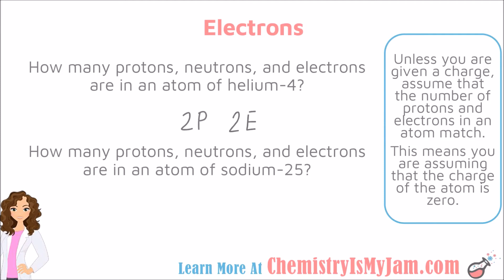And then from the mass number, we can determine the number of neutrons. Mass number minus protons tells me that there are 2 neutrons in this atom. We can repeat this process for sodium-25. You can look at the periodic table and determine that sodium is element 11, so there are 11 protons. Since we are not given a charge, we can assume that there are also 11 electrons. The 25 is the mass number. Mass number minus protons tells us the number of neutrons, so this isotope of sodium has 14 neutrons.